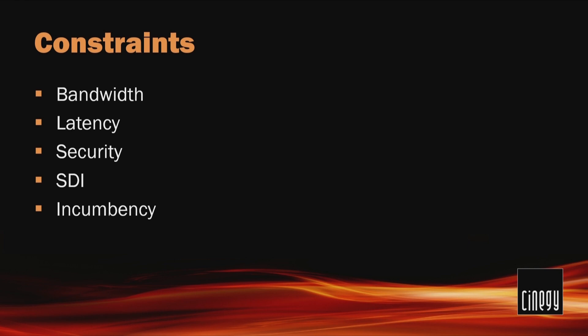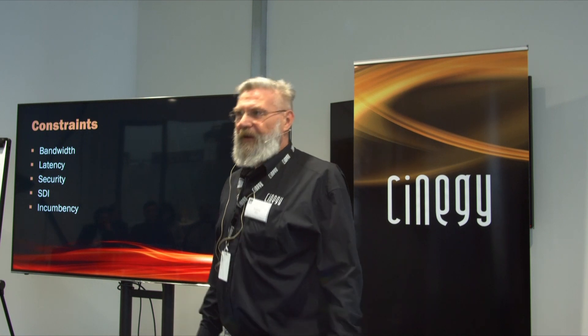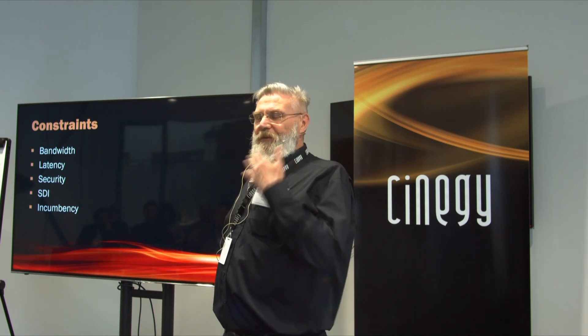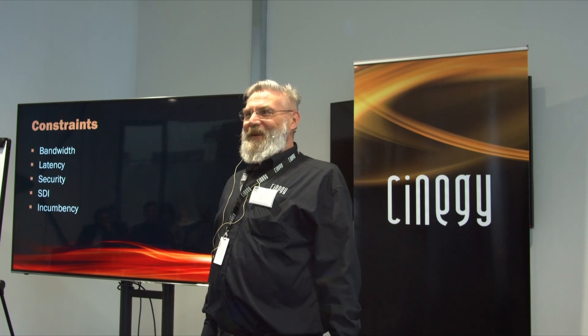So what have been the constraints for television over the internet? The constraints have been bandwidth, latency, and security — because once it's up there, someone's going to try and steal it. There's also SDI — SDI stands for 'SDI must die,' meaning entrenched attitudes in a traditionally conservative broadcast environment — and incumbency, where people say, 'It's worked so well for me, why would I need to upgrade it?'